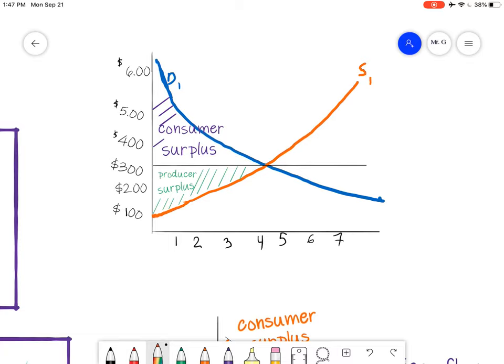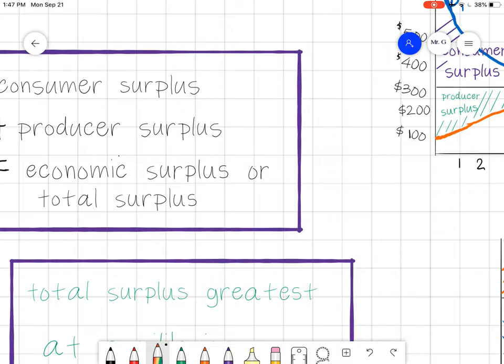And remember, this is efficient. Demand and supply, this is efficient. And we're going to look at price floors and price ceilings and how that makes it inefficient when we're looking at it.